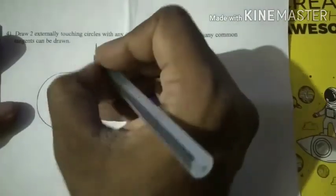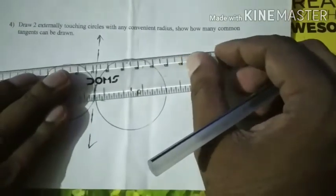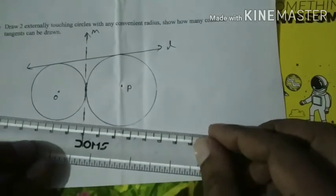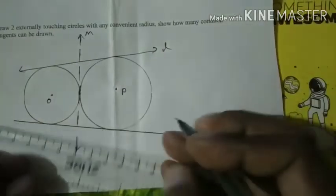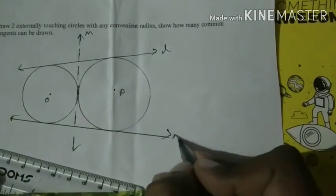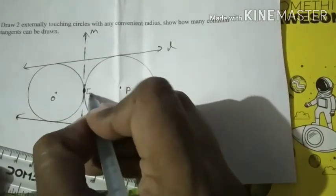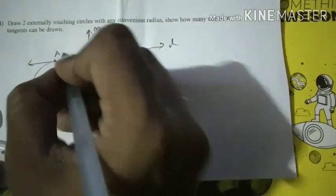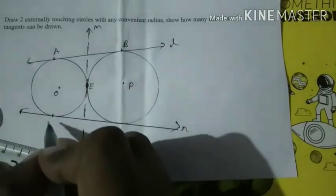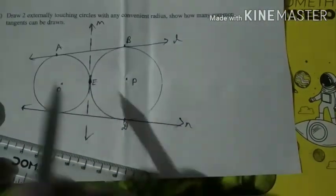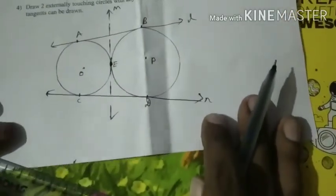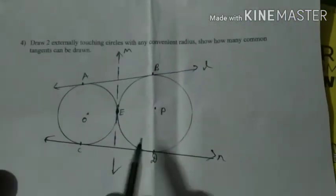You can draw one common tangent touching both circles, then another common tangent from another position, and one more common tangent. The touching points can be labeled A, B, C, D, and E. In total, you can draw three common tangents from two externally touching circles. Therefore, we can draw three common tangents.